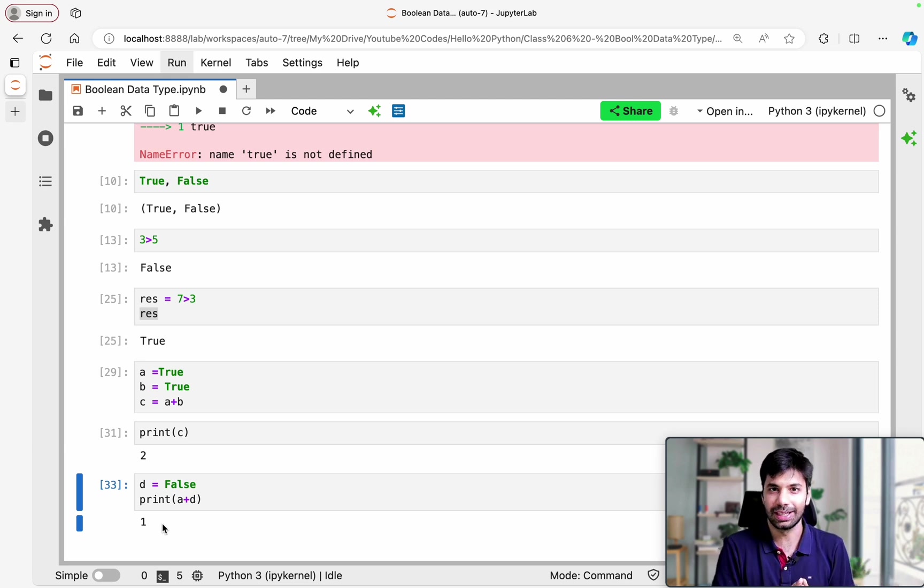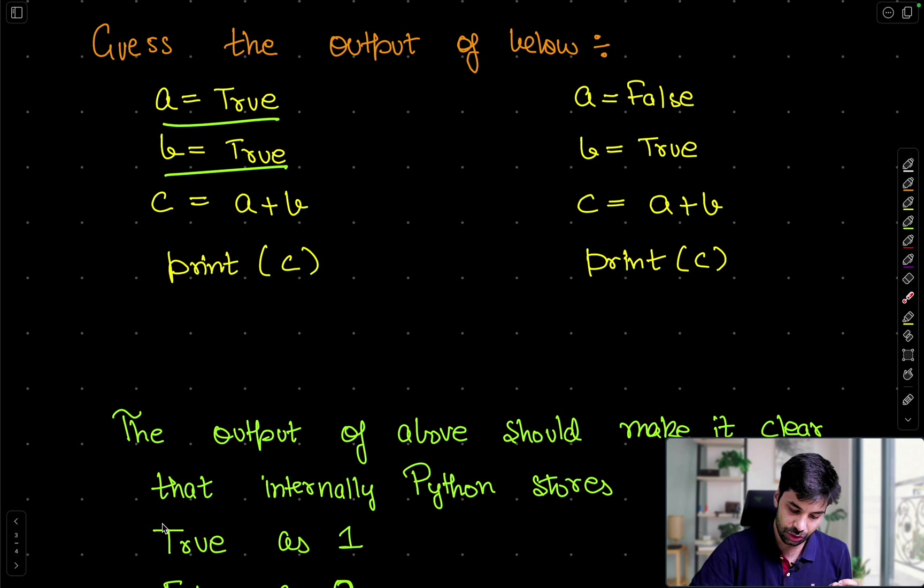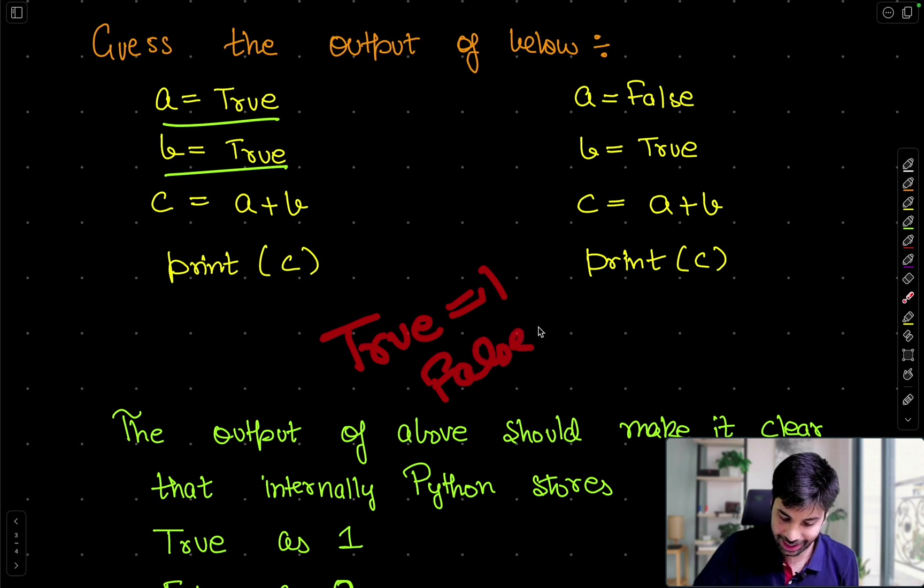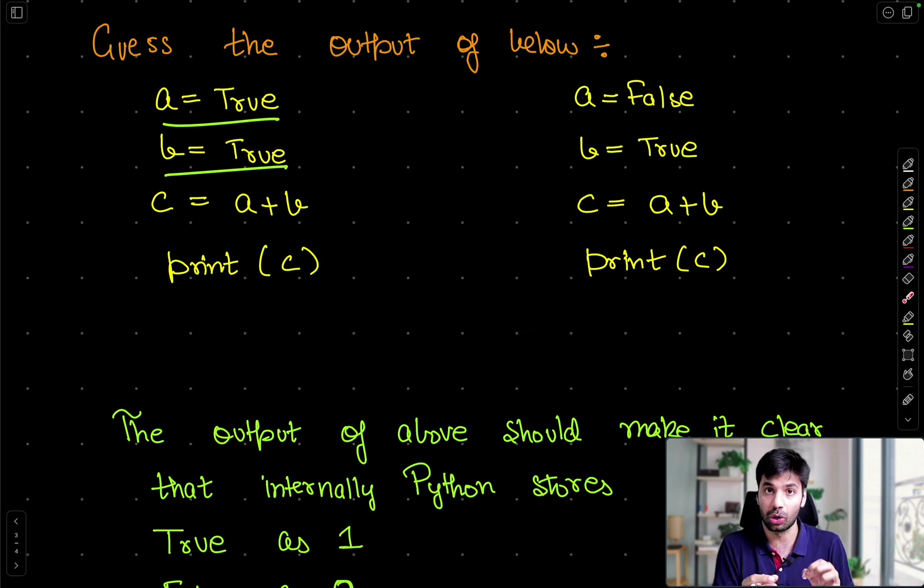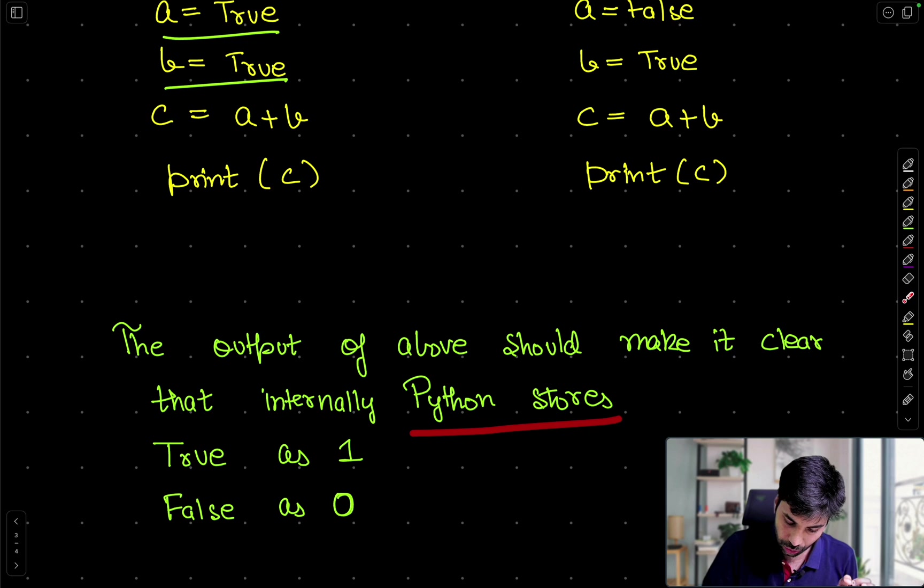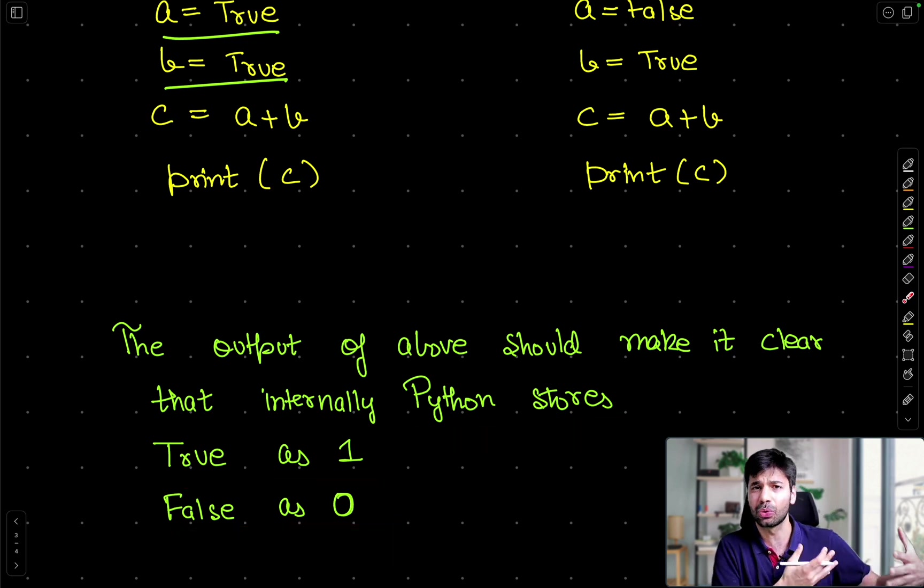So what is this telling us about the internal working of Python, which is very important to understand, is that internally Python is storing true as one and false as zero. That's the reason when we added two trues, it gave us two because internally Python says that true is one. So the above output makes it clear that internally Python stores true as one and false as zero. Now there is some background to that as well, which I can quickly explain. Till Python version 2.3, there were no specific Boolean data type. Python used to use one and zero only. But then Python introduced that and to make sure that backward compatibility is balanced as well, it basically made sure that that is how it will go. So true always will be one and false is zero. And bool actually is a subtype of your integer type.